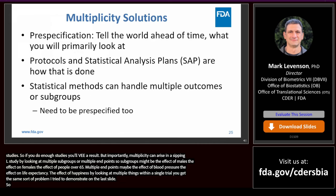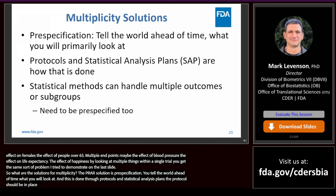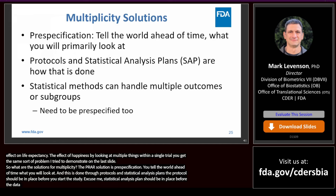What are the solutions for multiplicity? The primary solution is pre-specification — you tell the world ahead of time what you will primarily look at. This is done through protocols and statistical analysis plans. The protocols should be in place before you start to study, and the statistical analysis plan should be in place before the data are unblinded and should follow what's already outlined in the protocol.